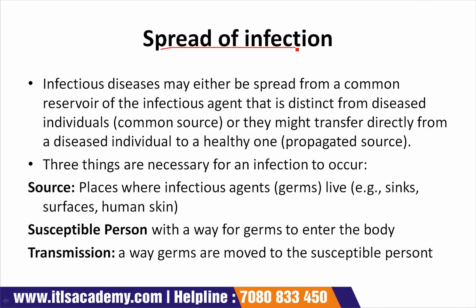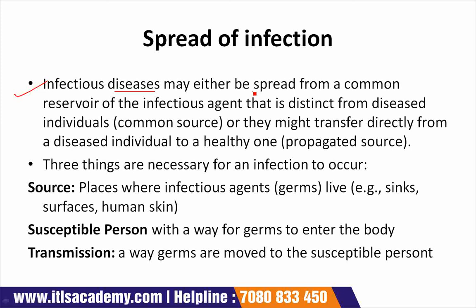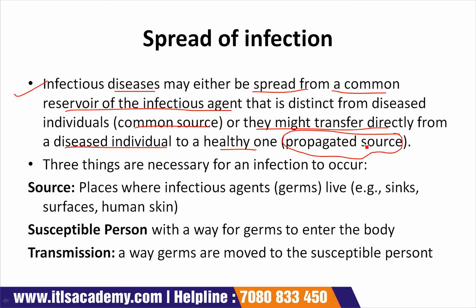Let's see how infection spreads from one person to another, or from one community to another. Infectious diseases may either spread from a common reservoir of the infectious agent — distinct from the diseased individual — or be transferred directly from a diseased individual to a healthy one. Sources may be of two types: common source and propagated source.